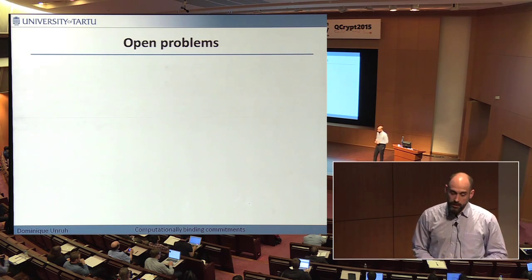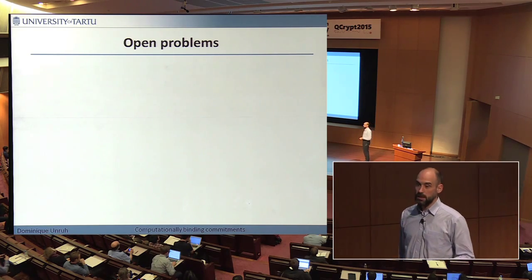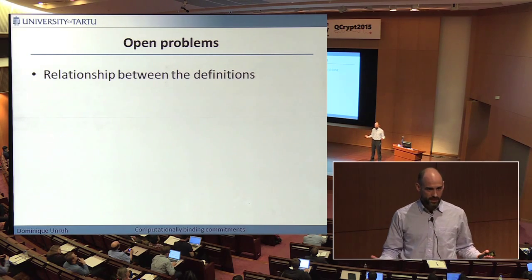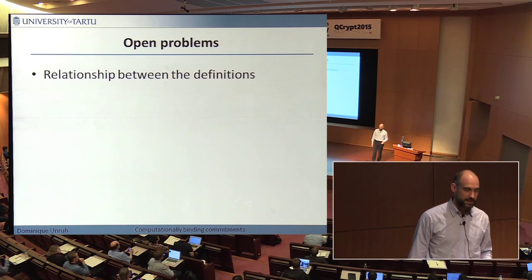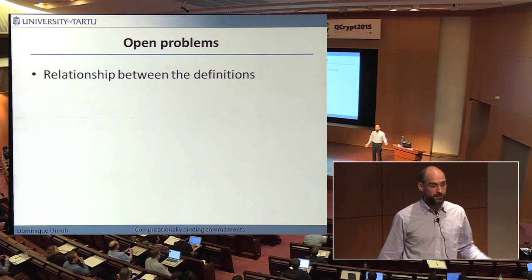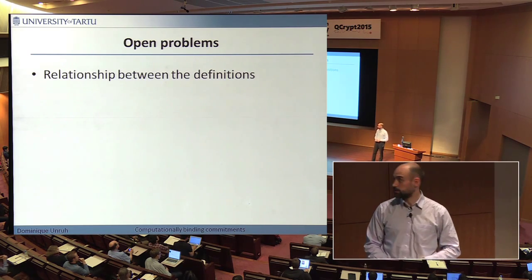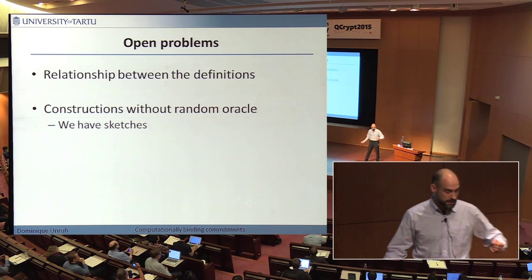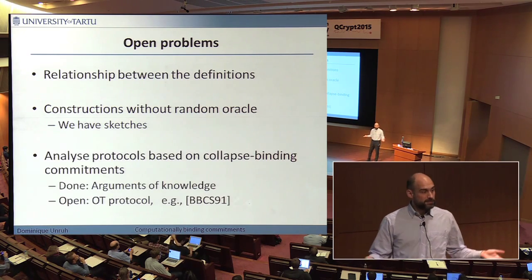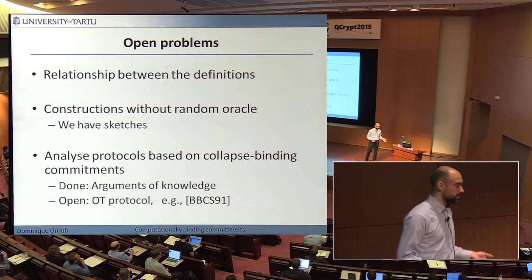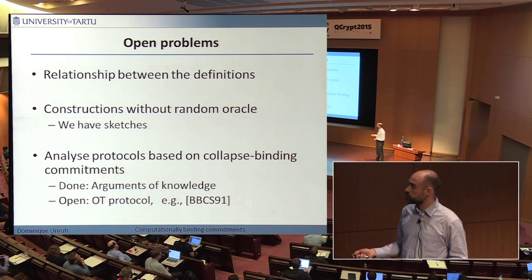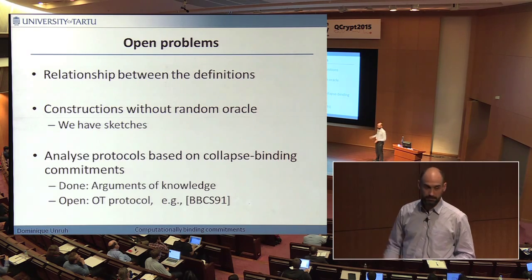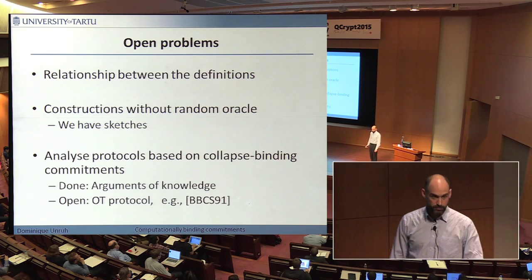What are the open problems? There are three big natural ones. First, how do all these commitment definitions relate to each other? For most of them we don't know whether they are actually different or which implies which. Second, constructions without random oracles — likely solvable but perhaps there are better constructions. Third, let's see where else this definition is useful. One interesting case I personally didn't manage was showing the BBCS 91 protocol, which constructs OT from commitments, to be secure under this definition — but perhaps it works.